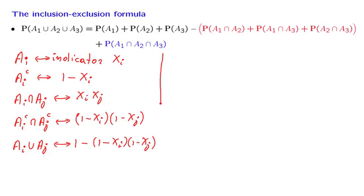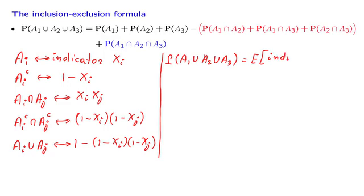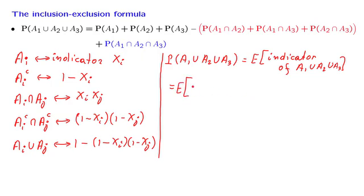Now let us put to use what we have done so far. We are interested in the probability that the outcome falls in the union of three sets. An important fact to remember is that the probability of an event equals the expected value of the indicator of that event. This is because the indicator equals 1 if and only if the outcome is inside that set, so the contribution to the expectation is 1 times the probability that the indicator is 1. The indicator of a three-way union is 1 minus a product of three terms of the form (1 minus xi).